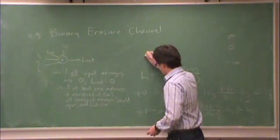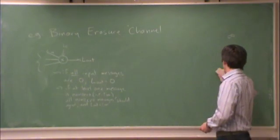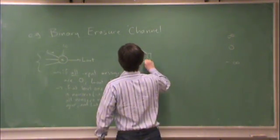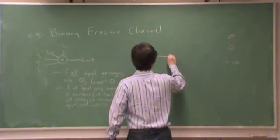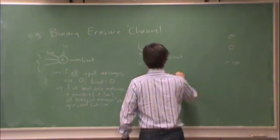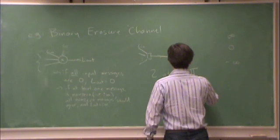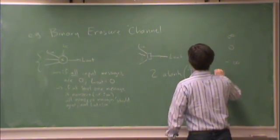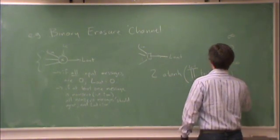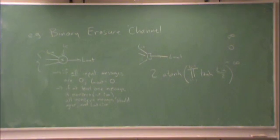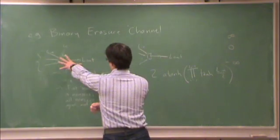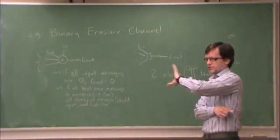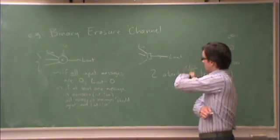Now to check, I have 2R tanh of the product from i equals 1 to LC minus 1 of tanh. So for one thing, we had that when we start this process at a variable, these output values are either plus infinity, 0, or minus infinity.